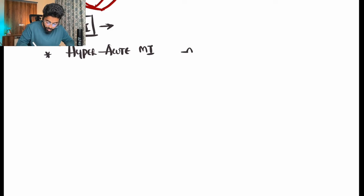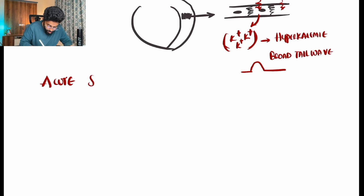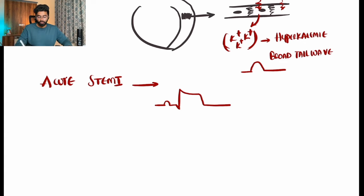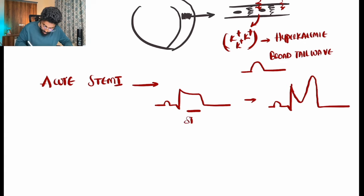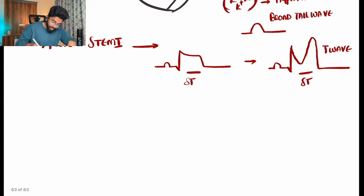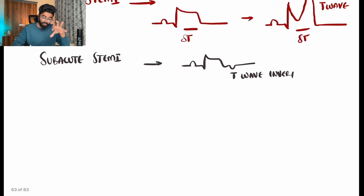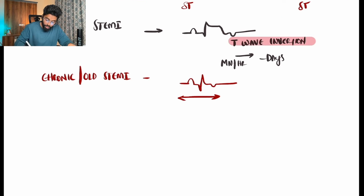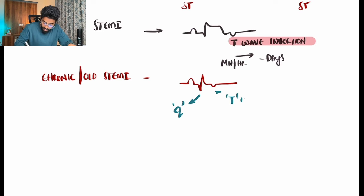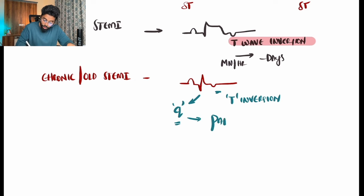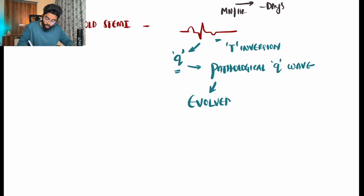In hyperacute MI, when the patient is having ongoing severe chest pain, we see broad and tall T waves. In acute STEMI, that broad and tall T wave takes the ST segment along with it, resulting in ST elevation. In subacute MI, there are T wave inversions. The ST segment changes can persist for minutes to hours, and the T wave inversions for days. The presence of a pathological Q wave along with T wave inversion represents evolved or old MI.